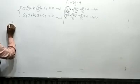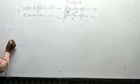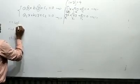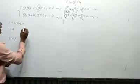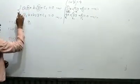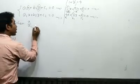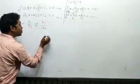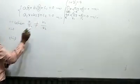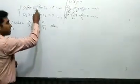There are three conditions. Condition number one: when a₁/a₂ is not equal to b₁/b₂ — that is, the ratio of x-coefficients is not equal to the ratio of y-coefficients — then the two equations have only one solution.